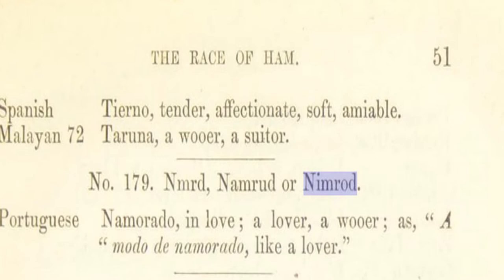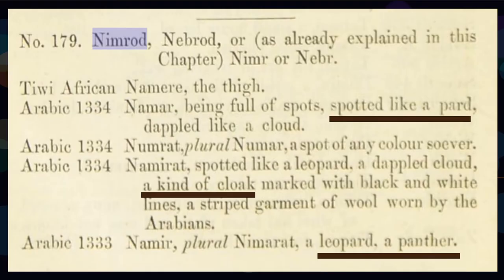You can see how there is a connection between that name Nimrod and the name associated with Yoruba, which is Lamarudu and Namarudu. You also see an interesting translation in the Portuguese — Namarudu — meaning in love, a lover, a wooer. This gets a little deeper when you start looking at all of these different translations related to Nimrod.